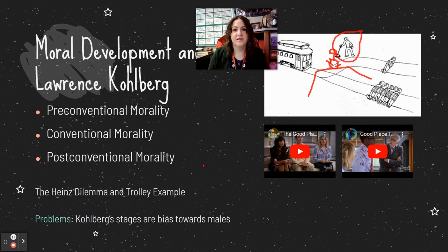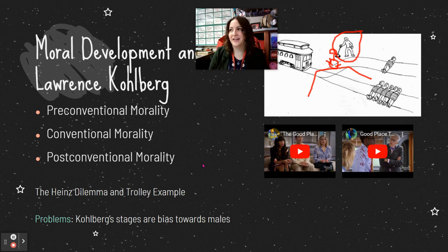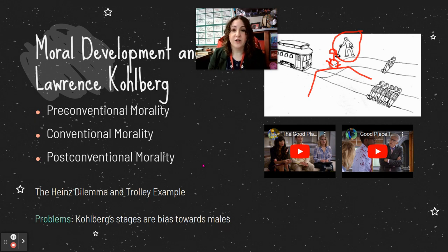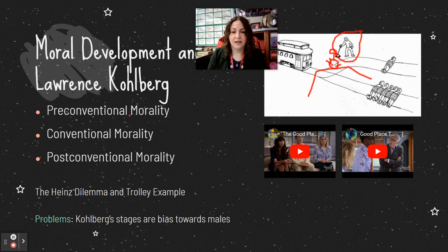The problems with these stages of moral development are that when Kohlberg created them, he was only studying the responses of males — and not just any males. He only studied rich white American males. So he was not accounting for how women might answer these questions differently. Women could very well make moral decisions differently than men, but these stages are based solely on the responses of men.